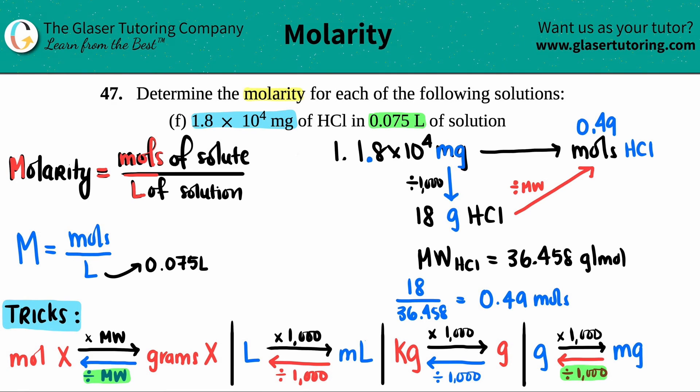Finally we found the mole value: 0.49 moles. Now since I have my two values, I can now find the molarity—moles 0.49 divided by liters 0.075. Let's plug it into the calculator.